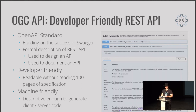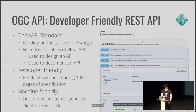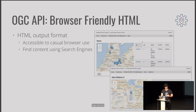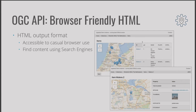The big thing here is this is offering a developer-friendly REST API. It's built on the success of Swagger — it's the Open API standard — and it's sufficient detail to generate clients in JavaScript and Java from this description. It's also developer-friendly, so you can go through this without reading 100 pages of specification, and it's machine-friendly so we can generate clients and servers. GeoServer is documenting the exact same kind of REST API. It's also offering browser-friendly HTML, so we can explore the feature content and see what data is being published — accessible to casual users and to search engines.